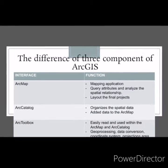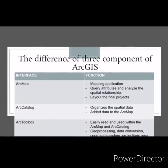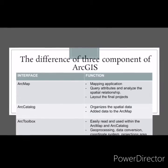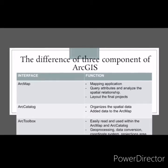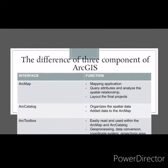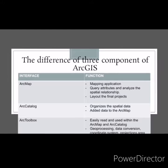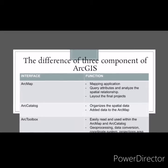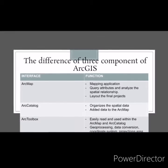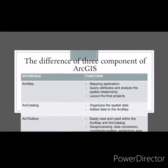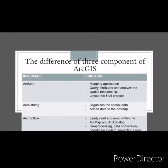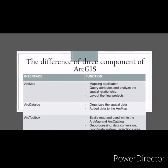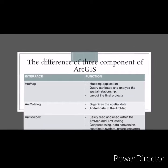The interface ArcMap has functions including mapping application, query attributes, analyzing spatial relationships, and laying out the final project. ArcCatalog is also an interface whose function is to organize spatial data and add data to the ArcMap interface. ArcToolbox is also an interface used for data processing, data conversion, and coordinate systems.